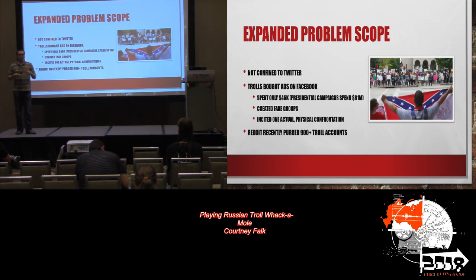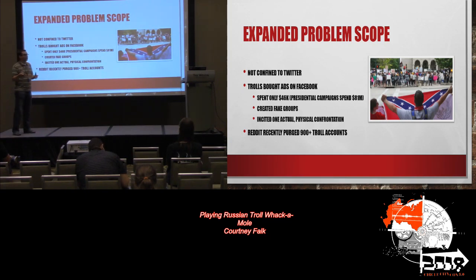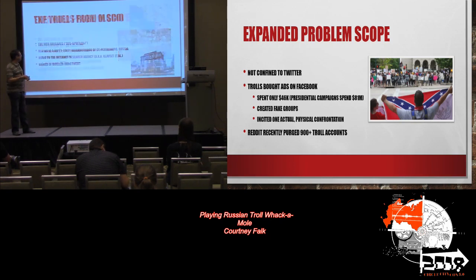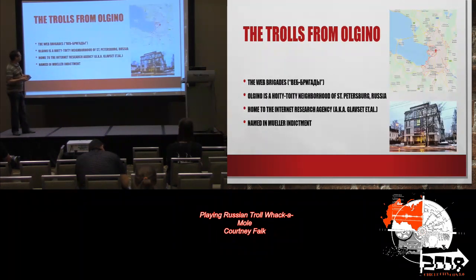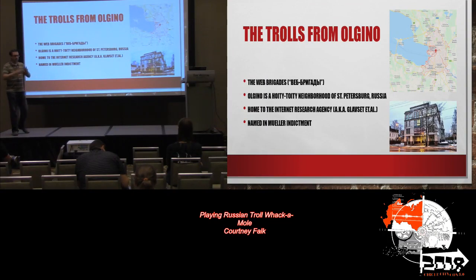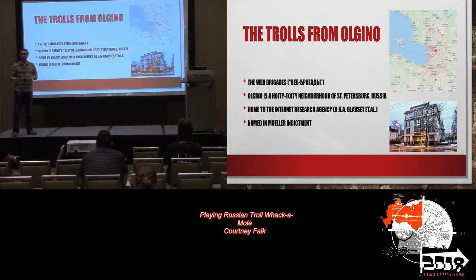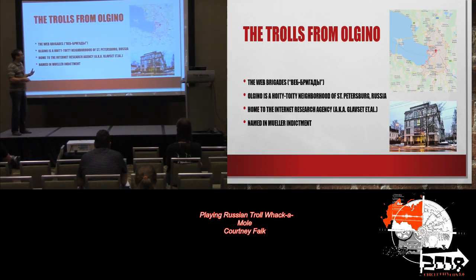Two fake Facebook groups created by the trolls — one anti-immigrant and one pro-Islam — organized two rallies for the same place at the same time, unbeknownst to the two groups. It's like putting two cats in a bag and shaking it, and this is what you get. Someone was very delighted with the effectiveness of this.